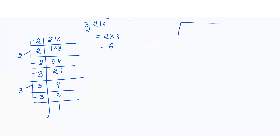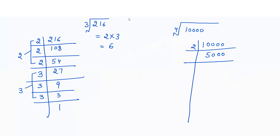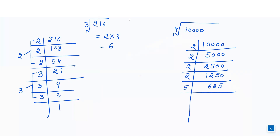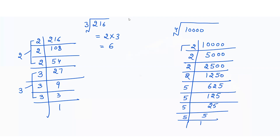Now if we have to find out the 4th root of a number, we take the example of 10,000. Since we have written 4, it means we have to make sets of 4 same numbers. Let's make the prime factors and keep dividing until we get 1. We get one set of 2s and one set of 5s, each with 4 same numbers. Writing each number once, the answer is 2 into 5 which equals 10. So the 4th root of 10,000 is equal to 10.